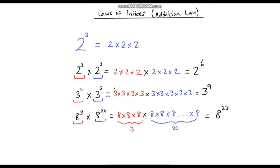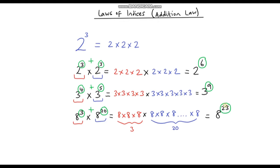Can you spot a quick way of simplifying without writing numbers out in full? Hopefully you spotted that these numbers are indices, and if we add them together it gives us the index of the answer. So 3 plus 3 is 6, 4 plus 5 gives us 9, and 3 plus 20 gives us 23. Instead of writing out the multiplication in full, we just add our indices together.